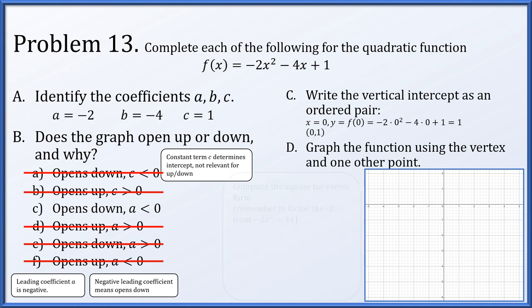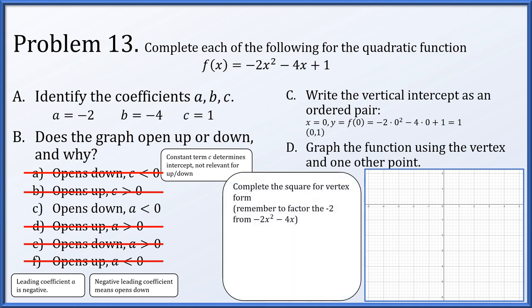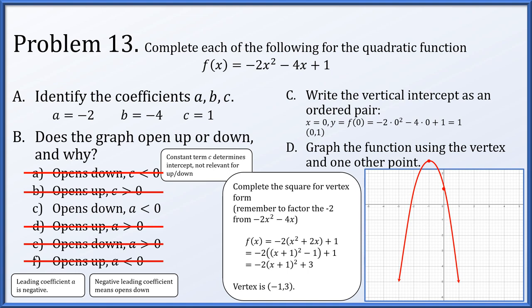Can we graph using the vertex and one other point? We complete the square, factoring out negative 2 from the quadratic and linear terms. After completing the square, f of x equals negative 2 times x plus 1 squared plus 3, so the vertex is at negative 1 comma 3. We know the y-intercept is 0 comma 1. With the vertex above and the parabola opening down, we draw it symmetrically, using the y-intercept as our other point.